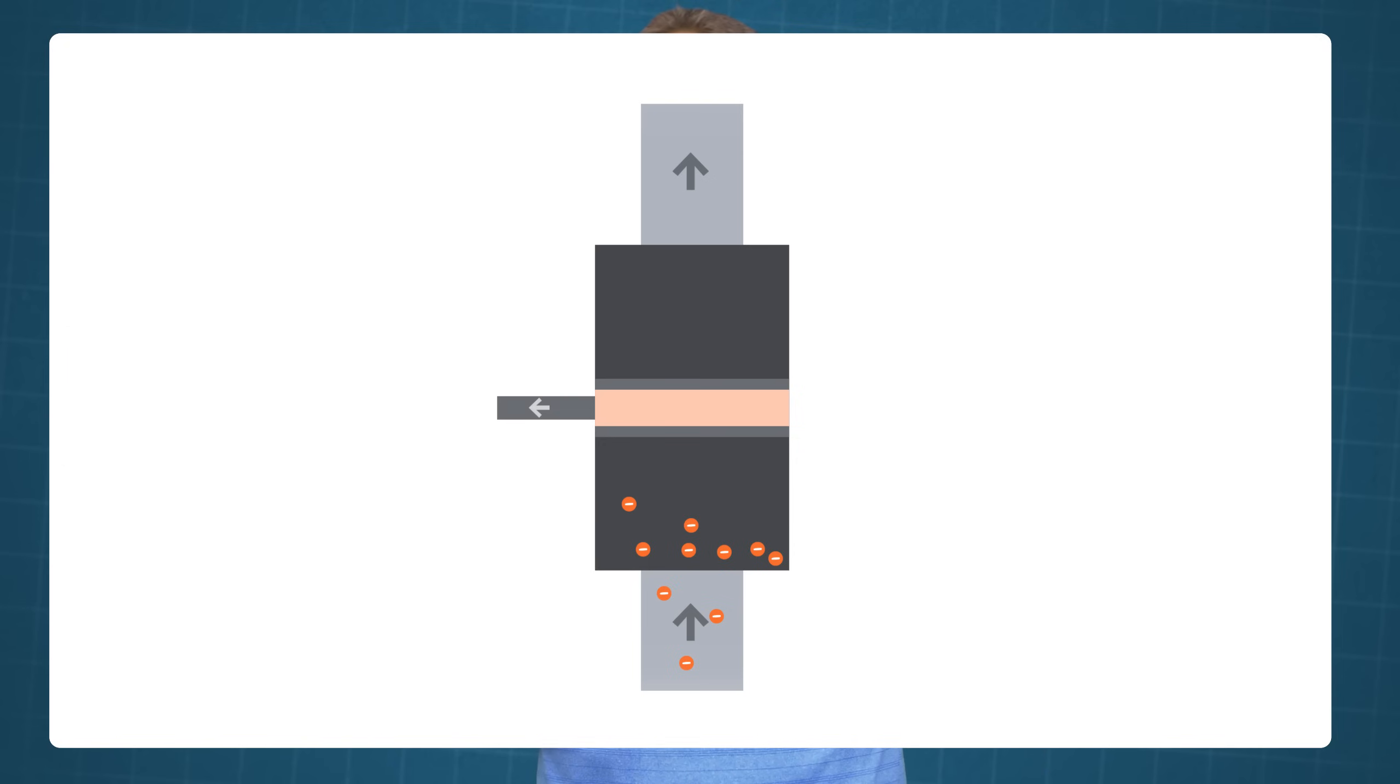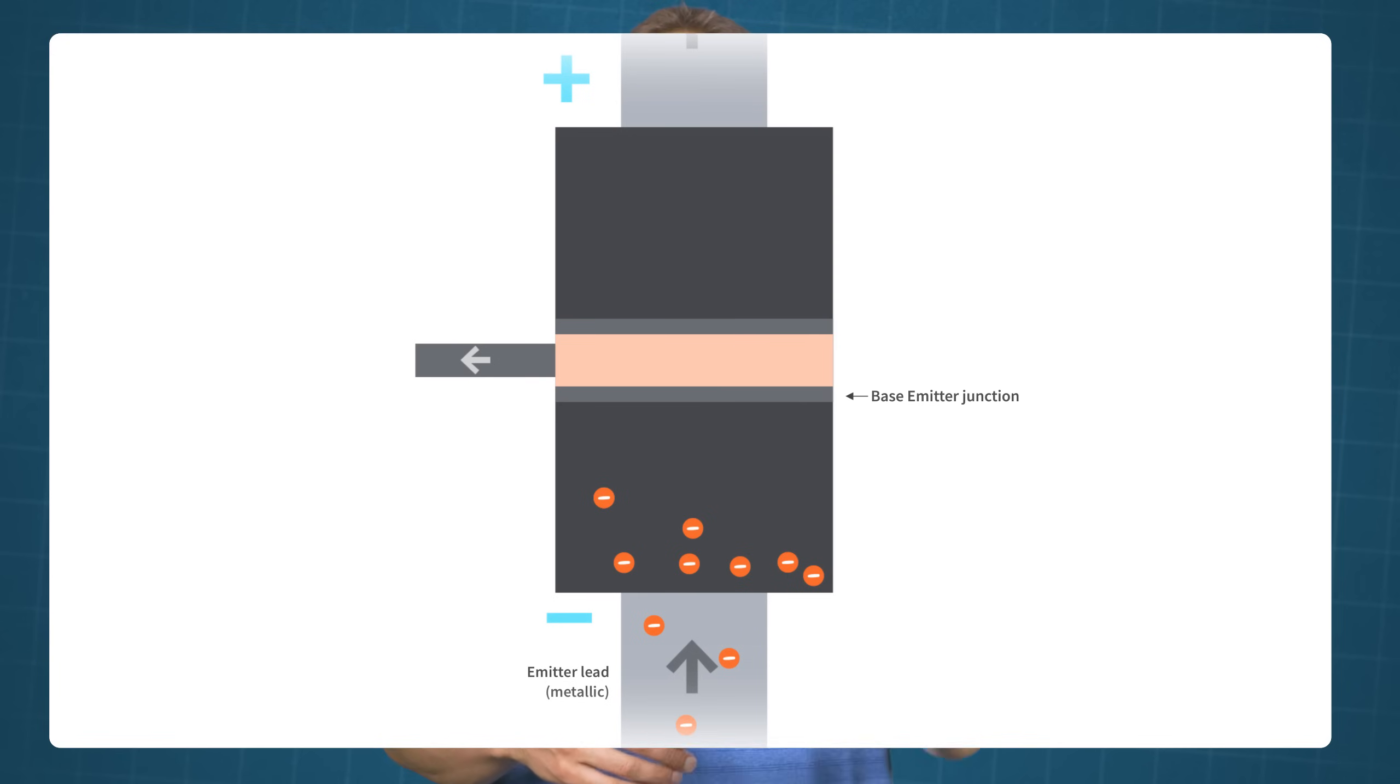At this point, I'd like to remind you that current and electron flow are backwards, which may cause confusion. Since the base-emitter junction is forward biased, free electrons from the emitter region easily cross the base-emitter junction, and go into the very thin and lightly doped P-type base region.